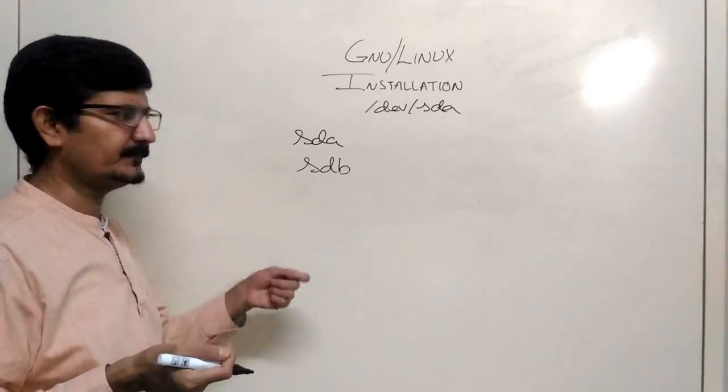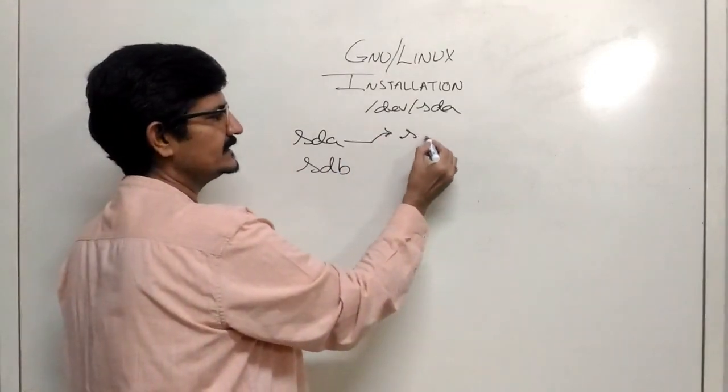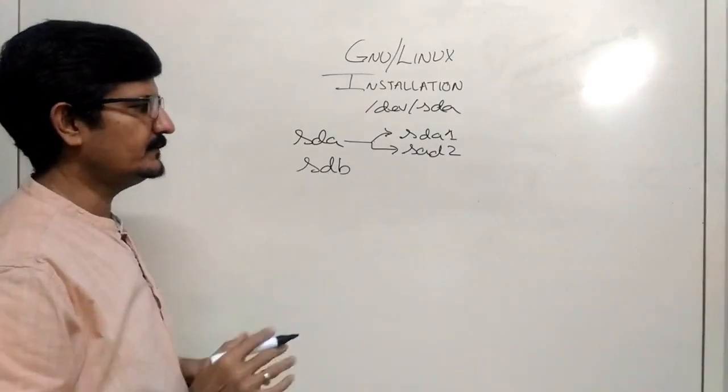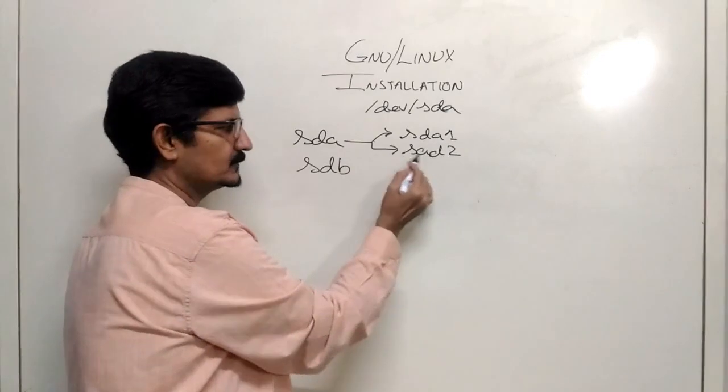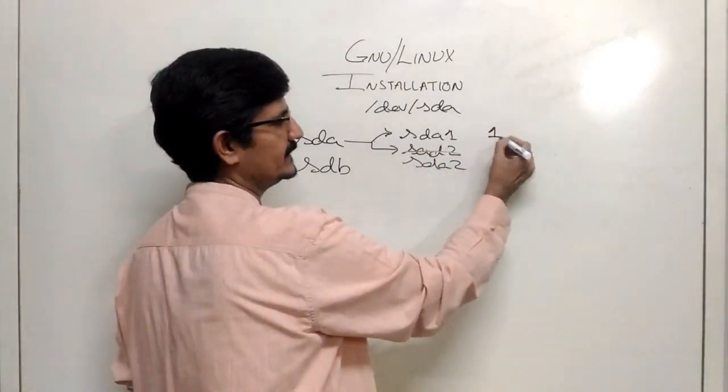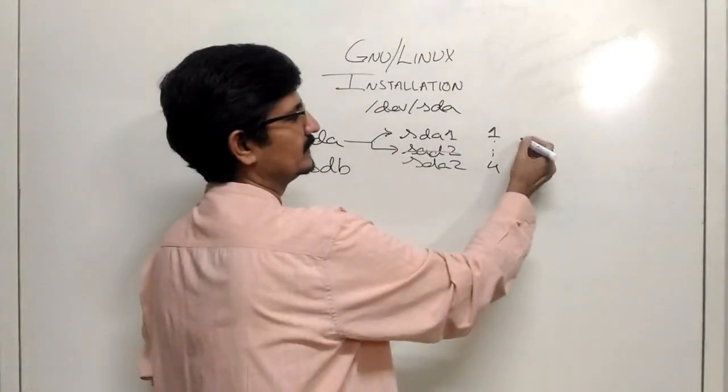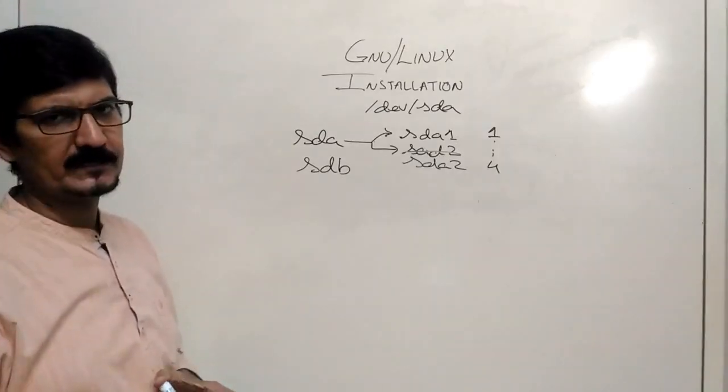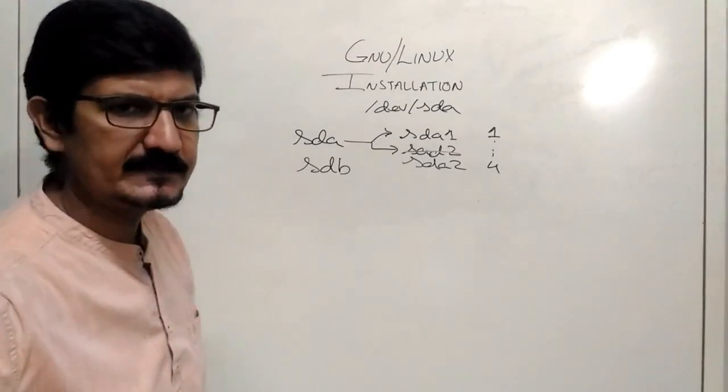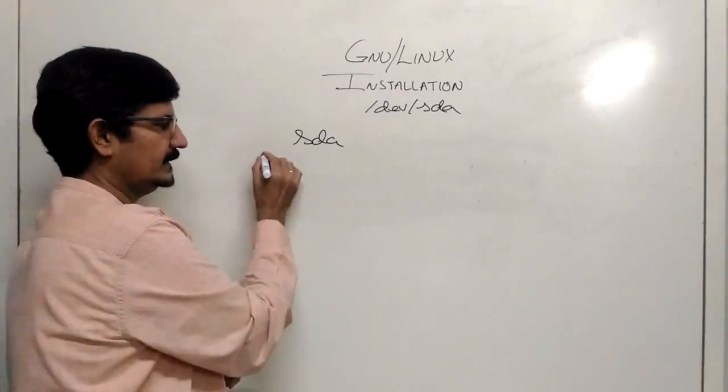Whenever you connect a pen drive or something, it takes up the next name. Now if this drive is partitioned, it is given names as SDA1, SDA2 and so on. One important aspect to understand is SDA1 to SDA4 are reserved for primary partitions. And after this all the numbers are reflecting the extended partitions.